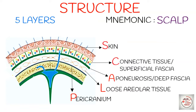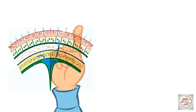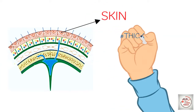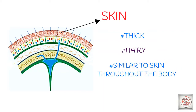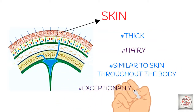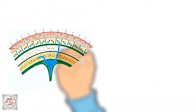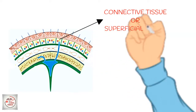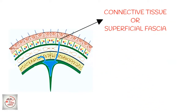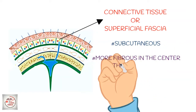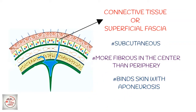Out of these five layers, the first three are known as scalp proper or surgical layers of scalp. The first layer, skin, is thick and hairy. Scalp ki skin similar hoti hai with the skin of our body, but the difference is scalp ki skin par exceptionally hairs ka amount bahut zyada hota hai. The second layer, connective tissue or superficial fascia, is subcutaneous — it lies just beneath the skin. Ye layer center mein zyada fibrous hoti hai than the periphery, and it connects the skin (first layer) to the aponeurosis (third layer).